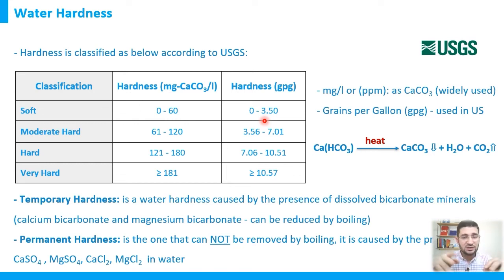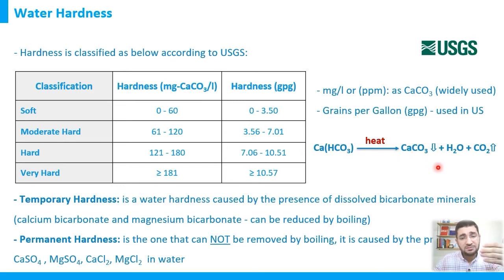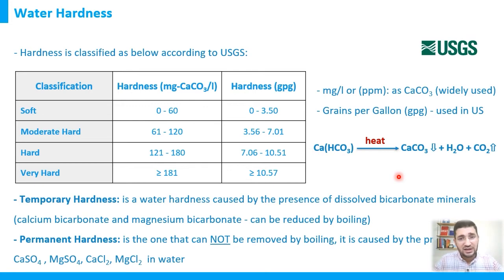When water contains hardness in the form of calcium bicarbonate — Ca(HCO3)2 — applying heat causes calcium carbonate to precipitate and carbon dioxide to evaporate, producing water. This means that increasing temperature or boiling hard water causes calcium carbonate precipitation. This is the key principle behind scaling inside pipelines, heat exchangers, and steam generation systems.